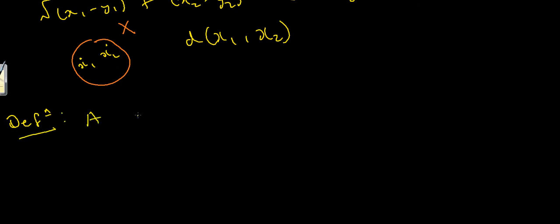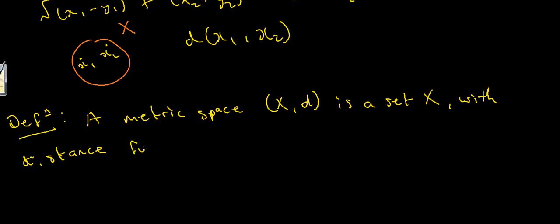So here's our definition. A metric space is a set x or let's write xd. So that's a set x with distance function d, distance function d from x cross x to r satisfying.